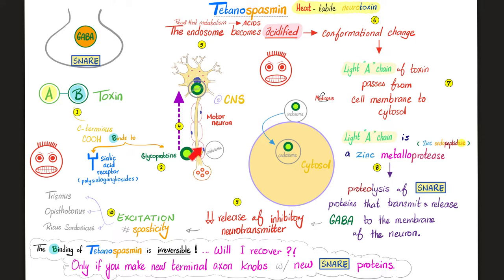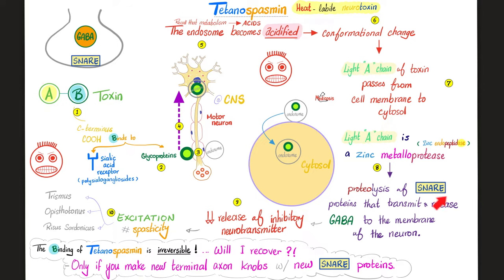Once the toxin binds cell receptors on your motor neurons in the central nervous system, it is transported by retrograde axonal transport to the soma of your motor neurons. Then it leaves the cell membrane, enters the cytosol via an endosome, and the B subunit is done. The A subunit — zinc metalloprotease — cleaves your SNARE proteins. The SNARE proteins used to release GABA from the presynaptic neuron into the synaptic cleft. When SNARE is broken down by proteolysis, you cannot release GABA, you cannot release an inhibitory neurotransmitter, and you become excitatory.